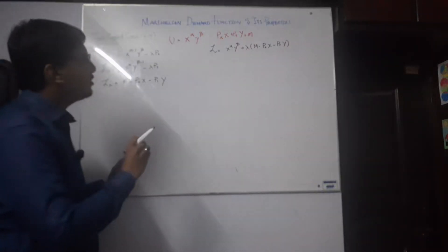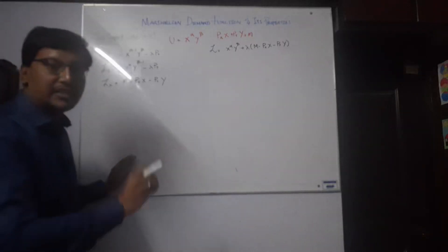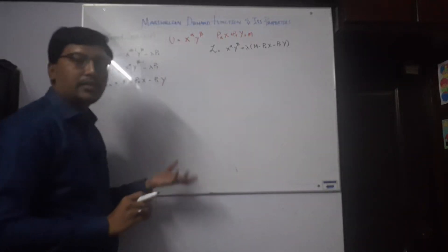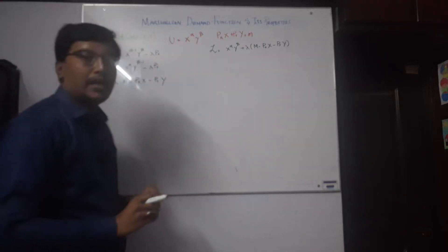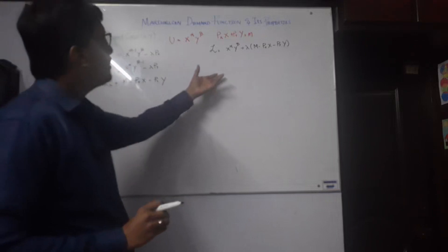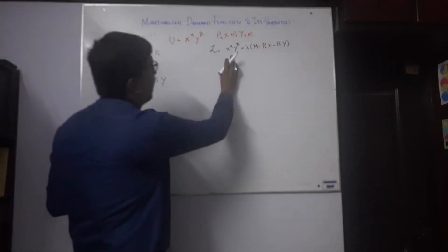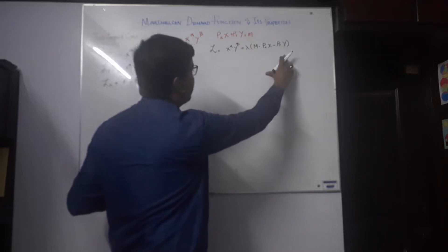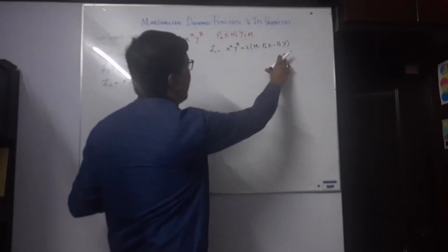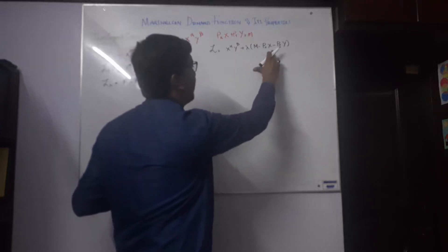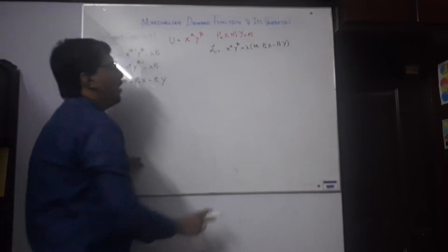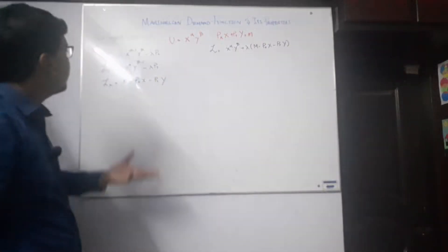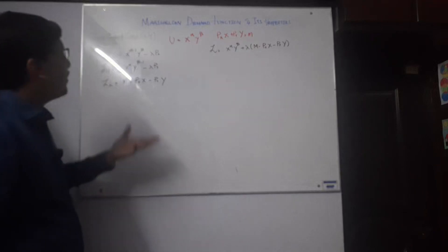The calculated demand functions for X and Y are called the Marshallian demand functions. We are taking here the problem of the Cobb-Douglas function, which is a very famous function in utility maximization. We have X to the power alpha and Y to the power beta. First, we will set up the Lagrange multiplier, plugging in the utility function plus lambda times the budget constraint in the form: M minus PxX minus PyY. We have three choice variables: X, Y, and lambda.